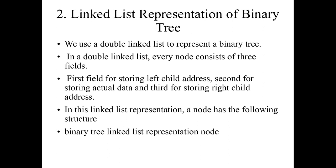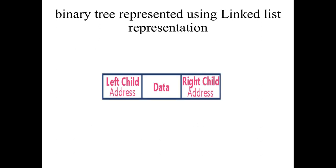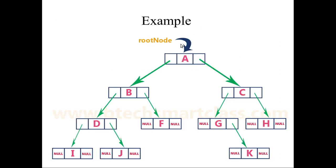The next method is linked list representation of the binary tree. We are using a doubly linked list to represent the binary tree. In a doubly linked list every node consists of 3 fields: the first field stores the left child address, the second field stores the actual data, and the third field stores the right child address. This is the node structure of the doubly linked list. For the same diagram, A is the root node, which stores the left and right child addresses of B and C.